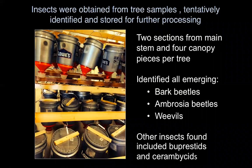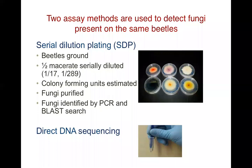We then determined what fungi were present on the beetles. Two sections from the main stem and four canopy pieces were taken per tree. We identified all the bark and ambrosia beetles and weevils that emerged from those samples using emergence buckets — each bucket contained either a main stem or multiple branch sections from the same tree. As beetles emerged, they fell into collection cups checked daily. From each emerging beetle, we used two assay methods to detect fungi: serial dilution plating, where beetles were macerated and plated onto agar, and a direct DNA sequencing method developed by Jenny Juzwick.